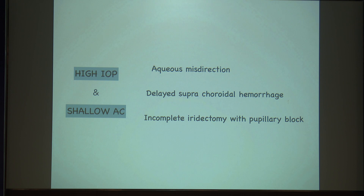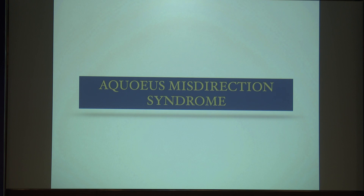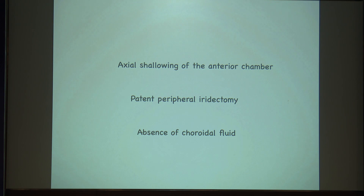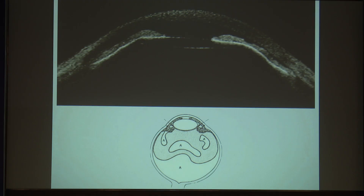Coming to high IOP and shallow AC: you can have either aqueous misdirection, delayed suprachoroidal hemorrhage, or incomplete iridectomy with pupillary block. In aqueous misdirection syndrome, there will be axial shallowing of the anterior chamber — it will be totally flat — and you will have a patent iridectomy. You have to rule out other choroidal fluids and other leaks, as aqueous misdirection will not show any choroidal fluid.